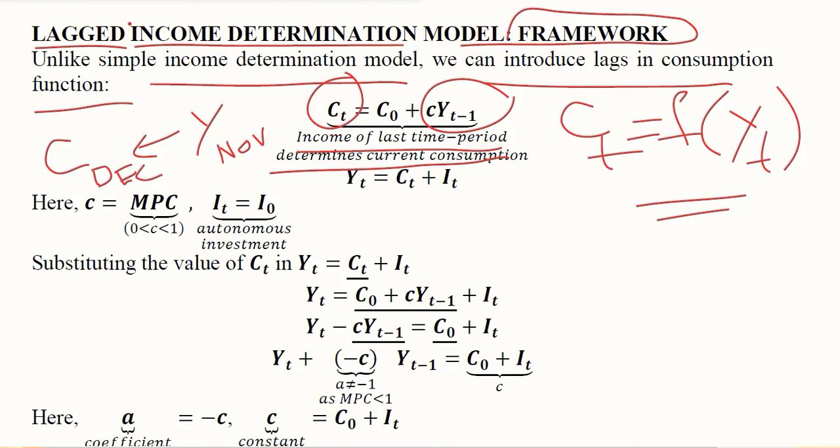Acknowledging this fact, we have a certain function for Ct. Investment It is assumed to be autonomous; we are excluding the possibility of induced investment. Small c is the marginal propensity to consume (MPC), and its range is definitely between 0 and 1.